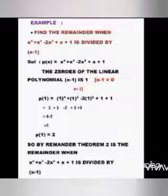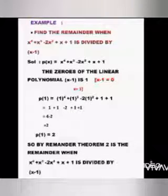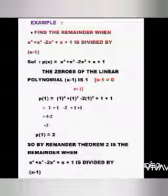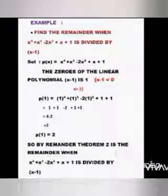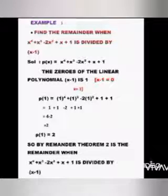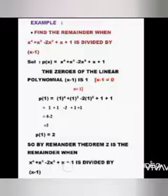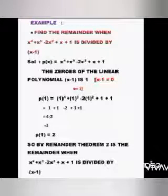So minus 2 × 1 is minus 2. Plus 1 plus 1. You will get 4 - 2. 4 - 2 is 2. So P(1) = 2. By the remainder theorem, 2 is the remainder when x⁴ + x³ - 2x² + x + 1 is divided by x - 1.